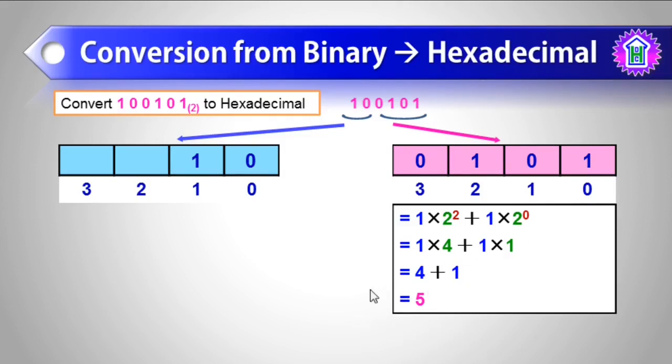So the first digit we have calculated is 5, it will be in the unit place.